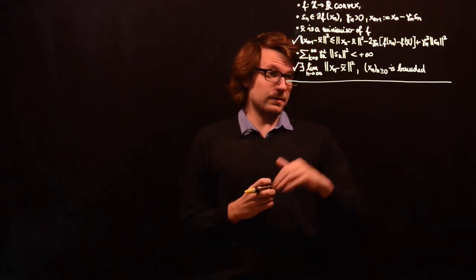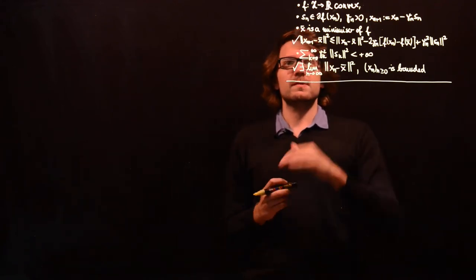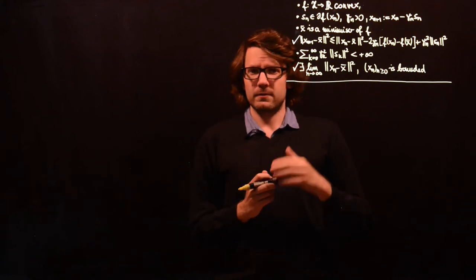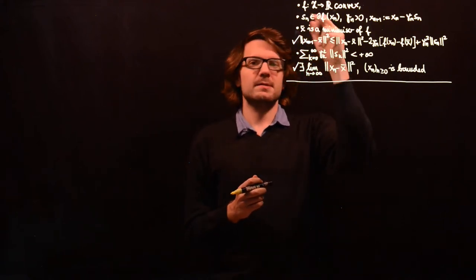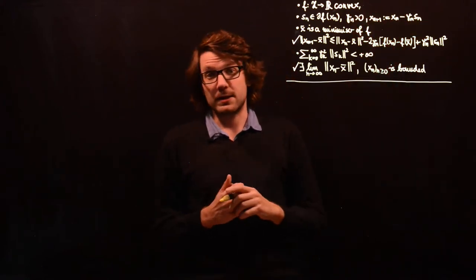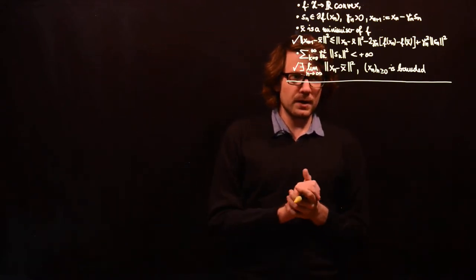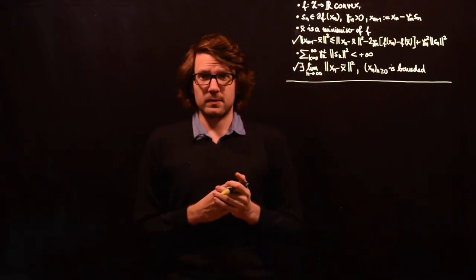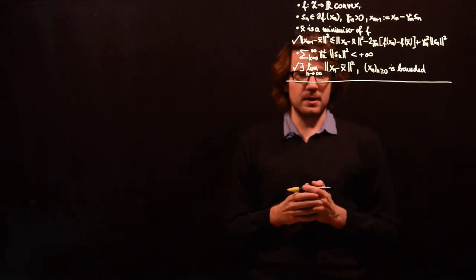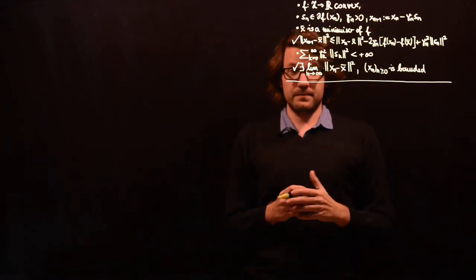We have so far shown that the sequence xn is bounded. Now what we want to do is show that also the sequence of subgradients sn is bounded, so that it cannot happen that as we get closer and closer to a solution these subgradients tend to infinity, which would basically spoil convergence by making the iteration unstable. To show this, we will use the result on local Lipschitz continuity of f, established in an earlier video, together with the boundedness of the sequence xn.